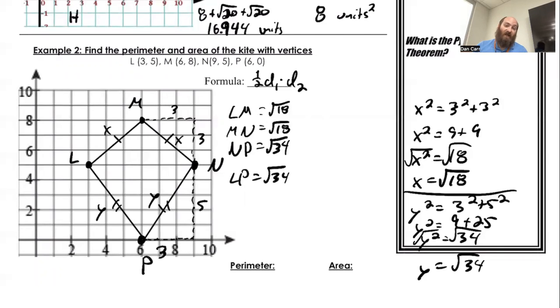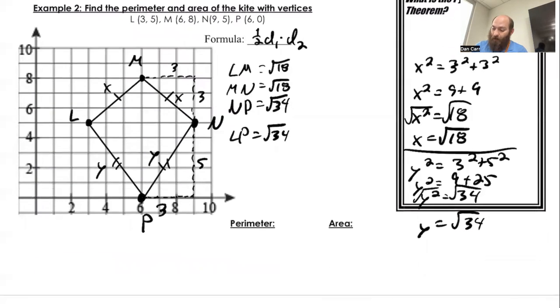So we're just doing Pythagorean theorem to find the lengths. For perimeter, it's going to be everything added up. So the square root of 18 plus the square root of 18 plus the square root of 34 plus the square root of 34. So I'll put that in my calculator real fast. 2 times the square root of 18 and then 2 square root of 34s. That's going to give me 20.147.